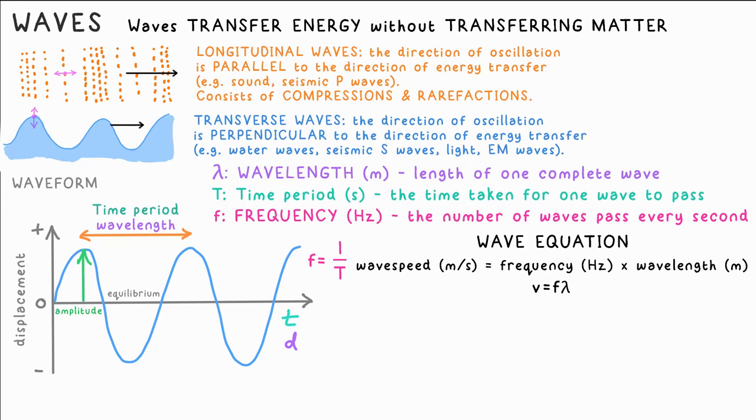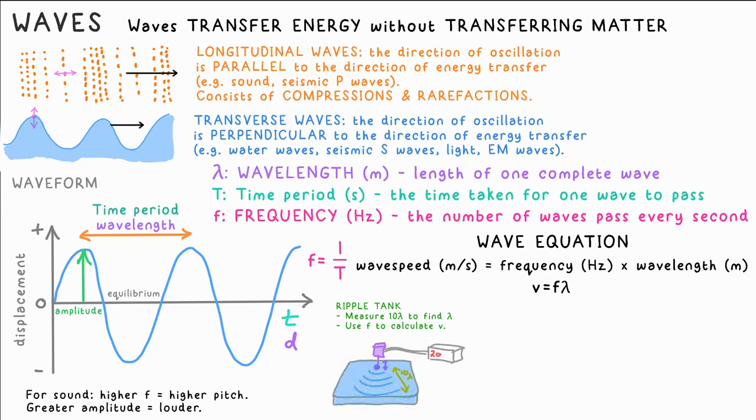The wave equation is this. V equals F lambda. That's wave speed equals frequency times wavelength. A ripple tank will tell you what frequency is made. You can measure the distance between 10 peaks, then divide by 10 to get the wavelength. Then just use the wave equation to get the speed of the wave.